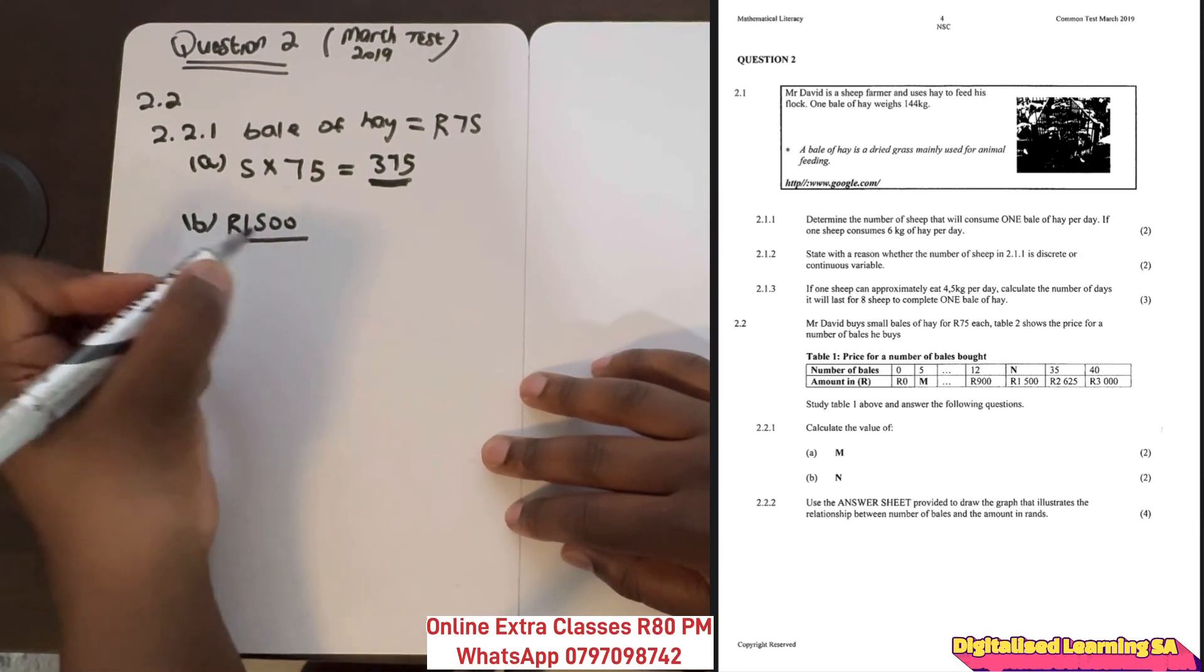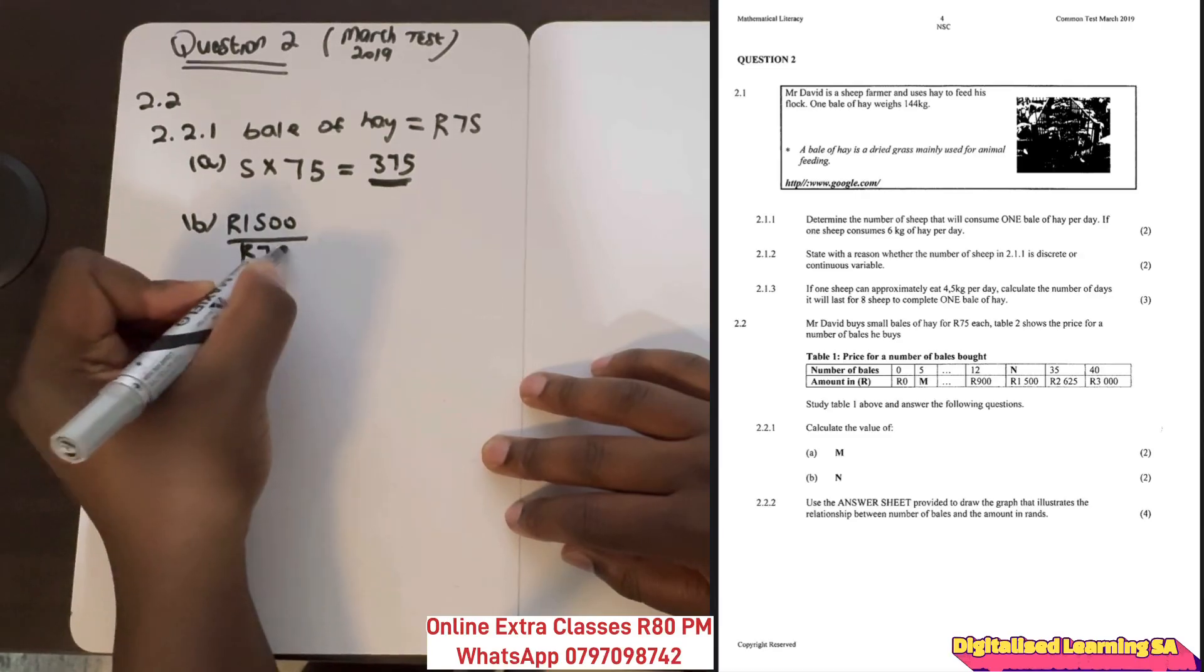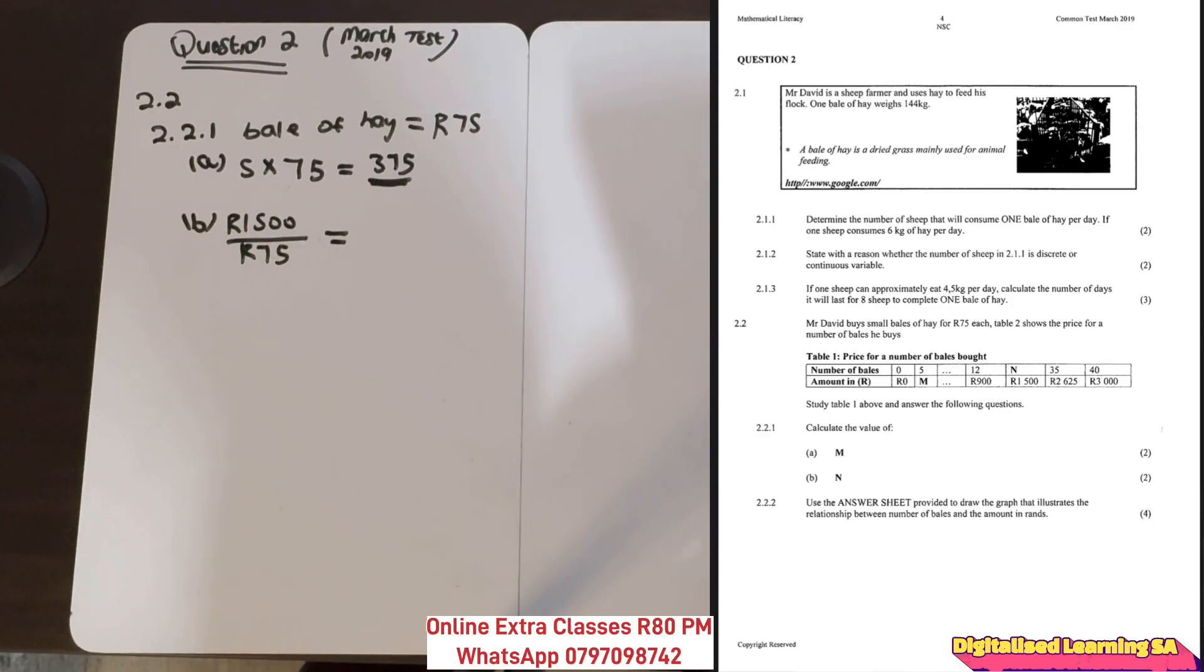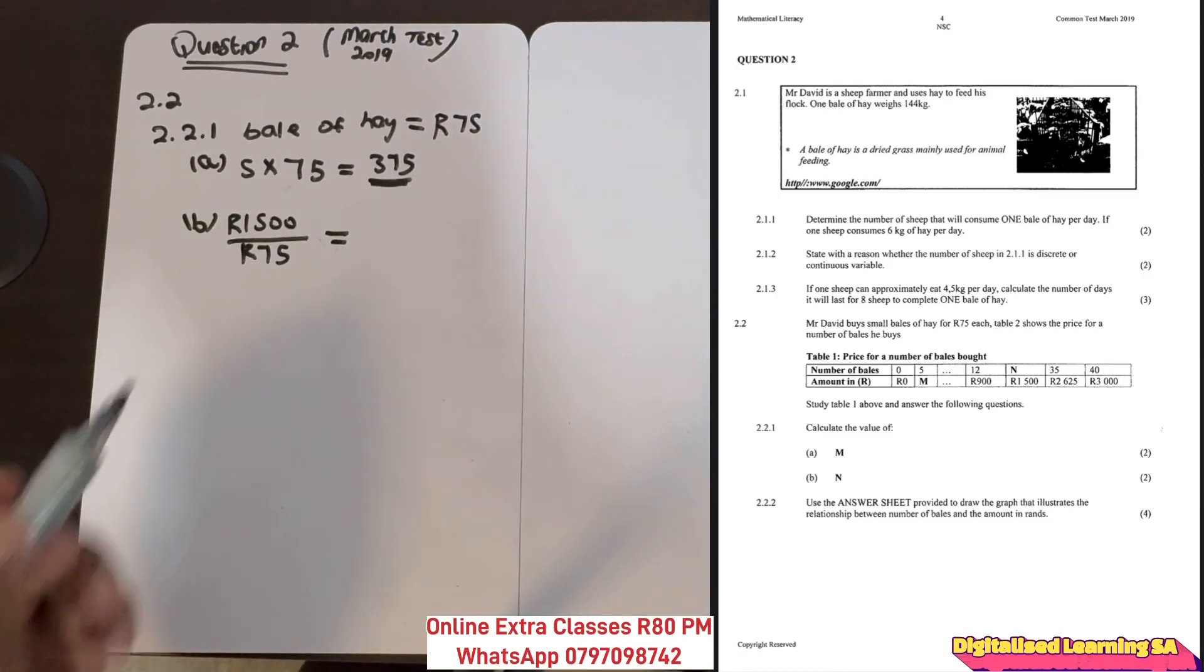We divide 1500 by 75 francs, and the answer is 20 bales.